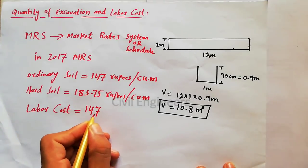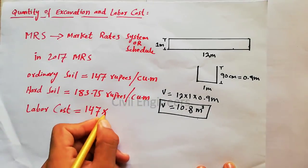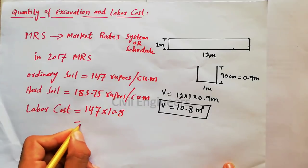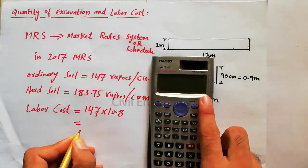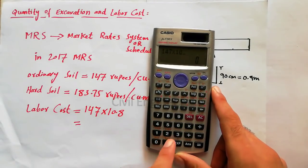This is the per cubic meter rate multiplied by 10.8. So it will come 147 multiplied by 10.8.